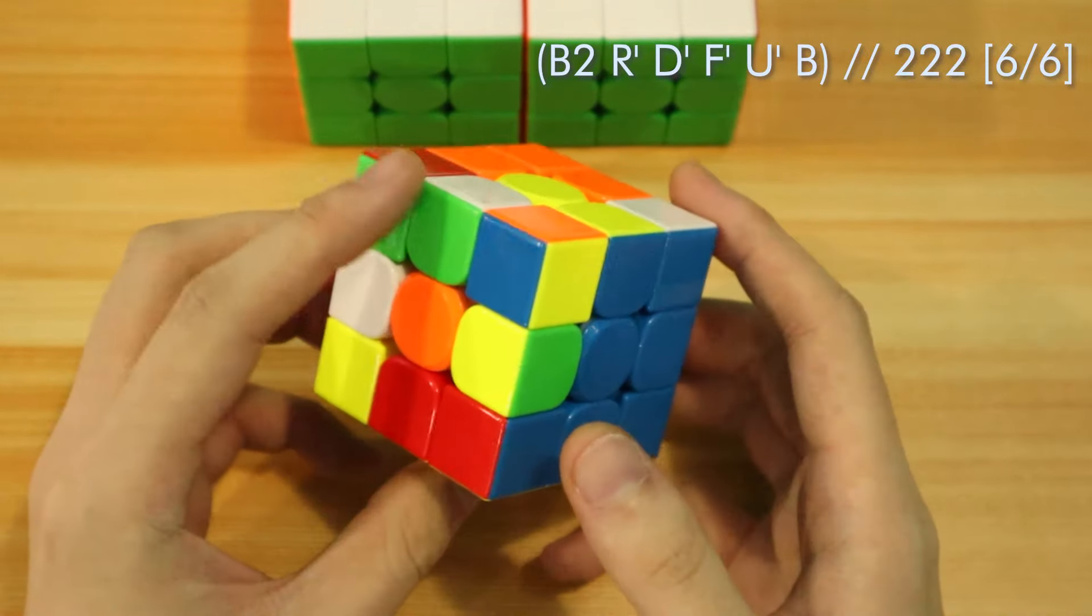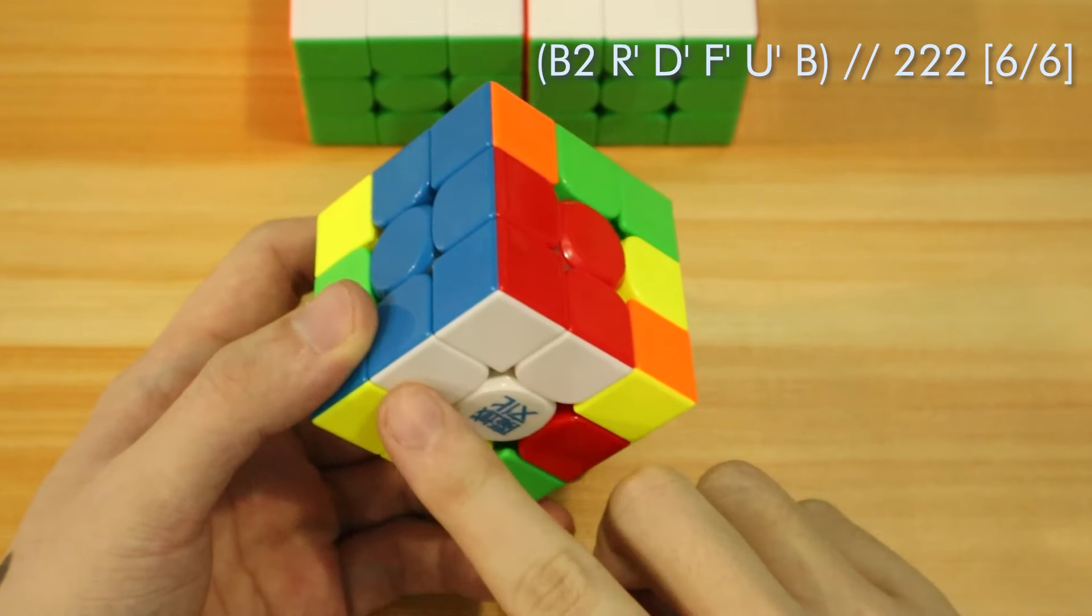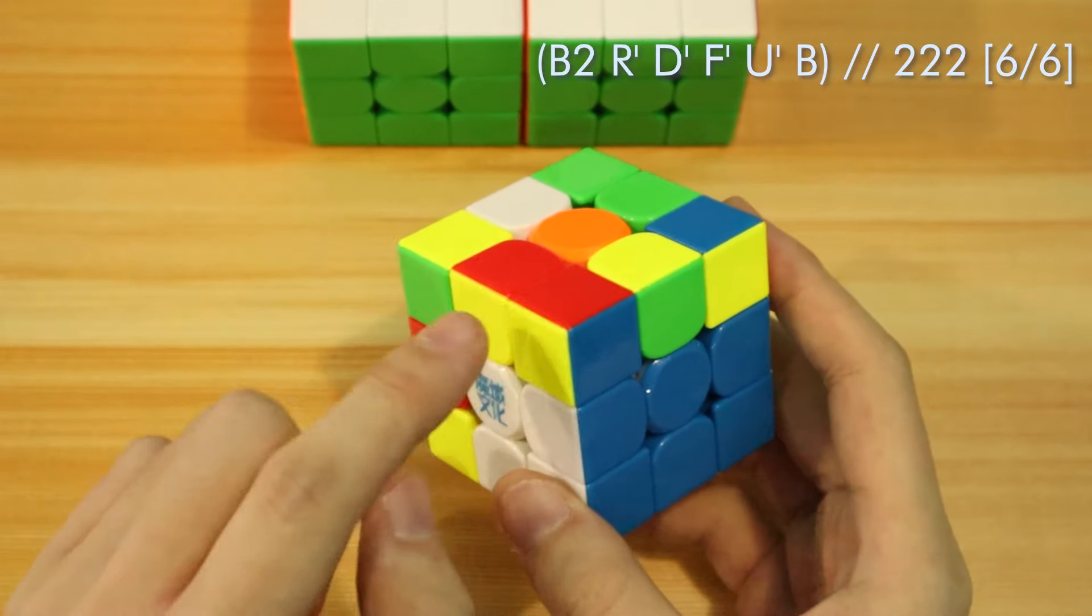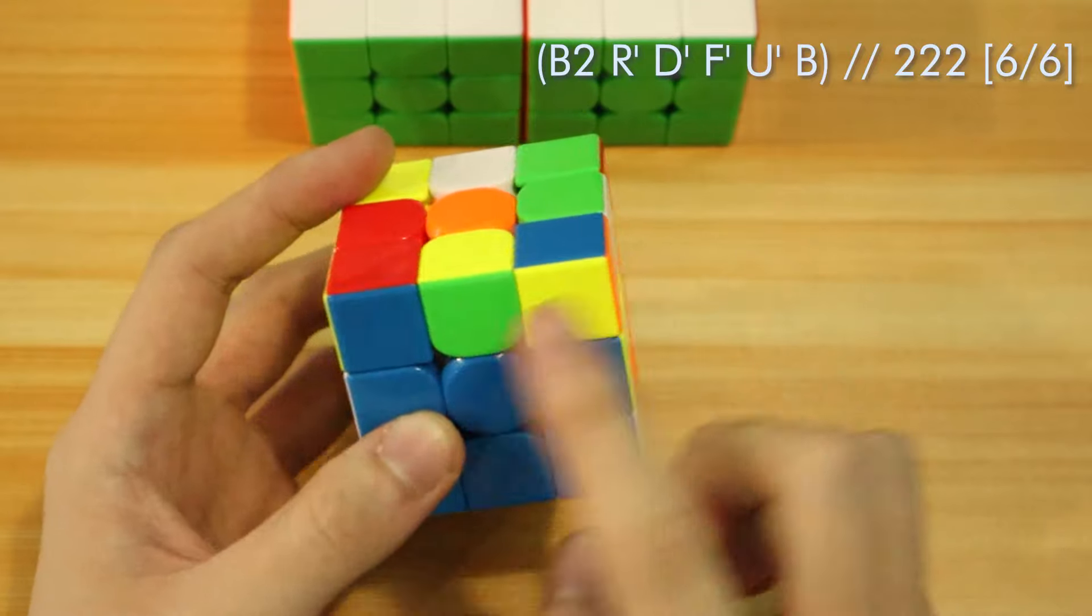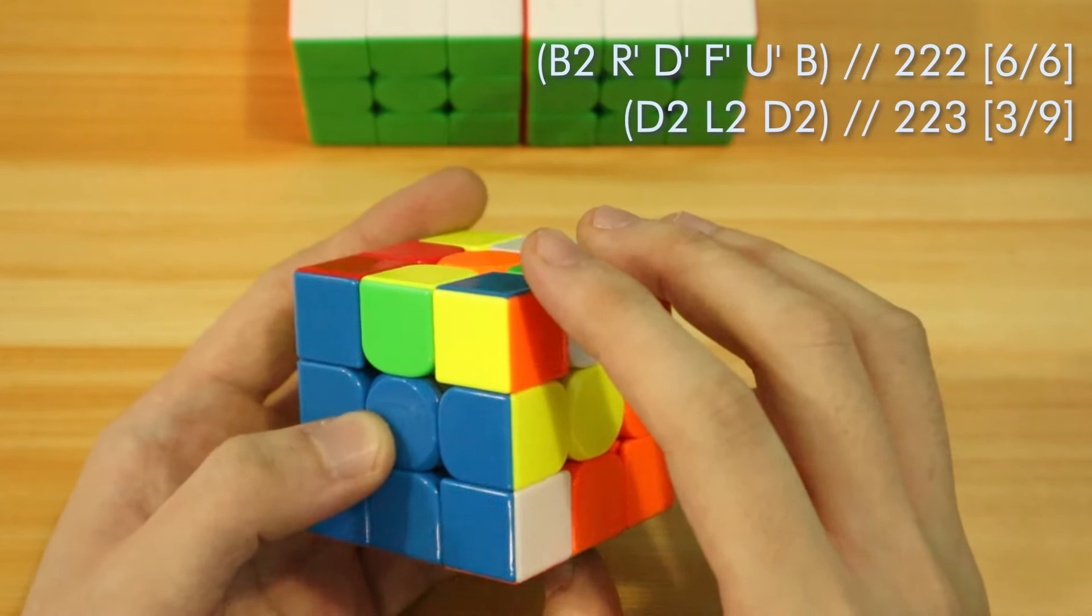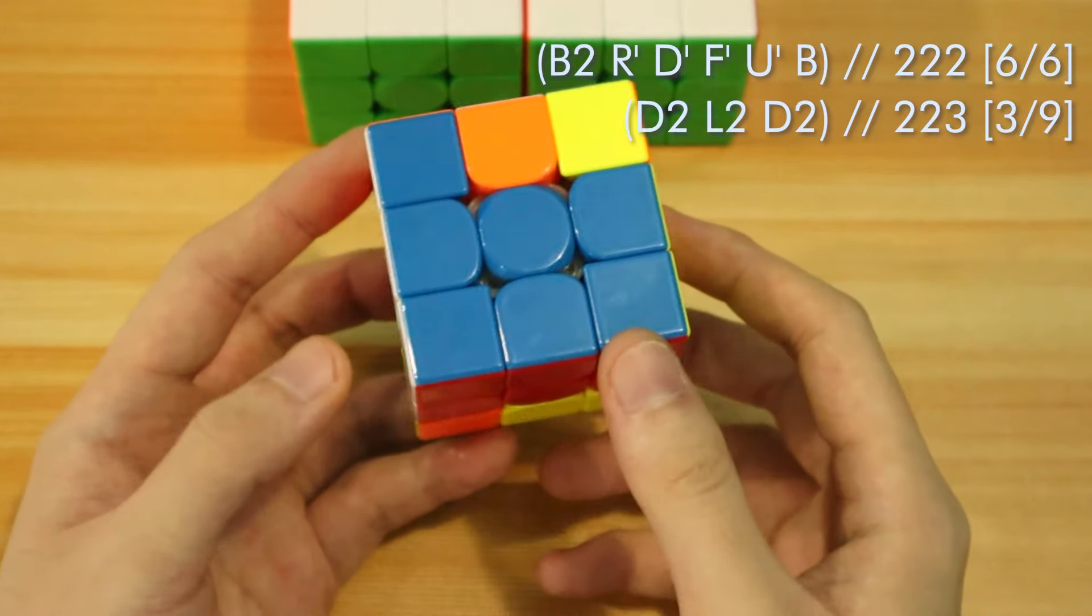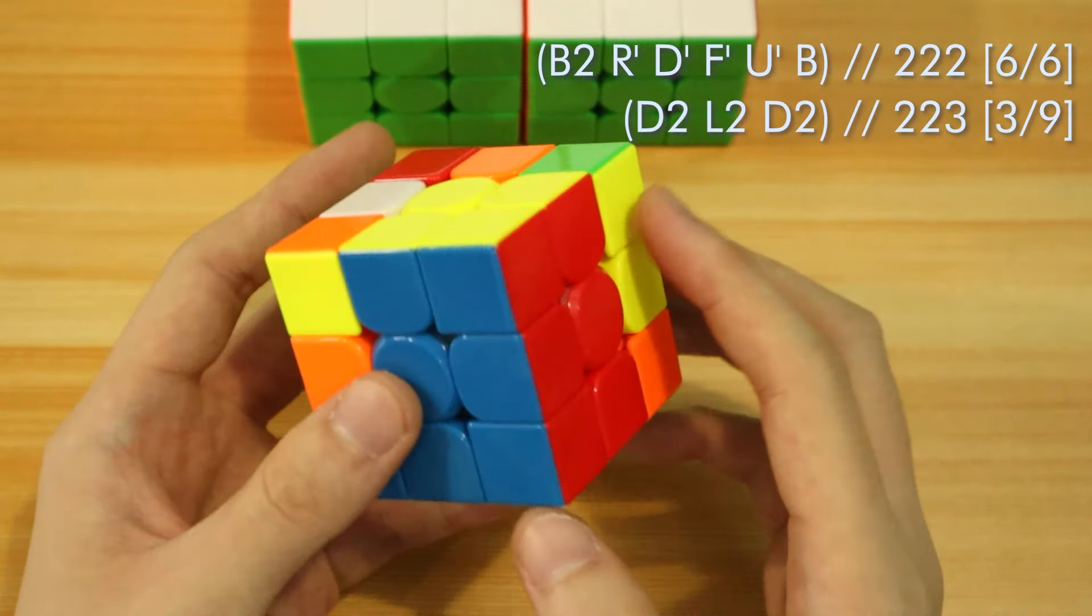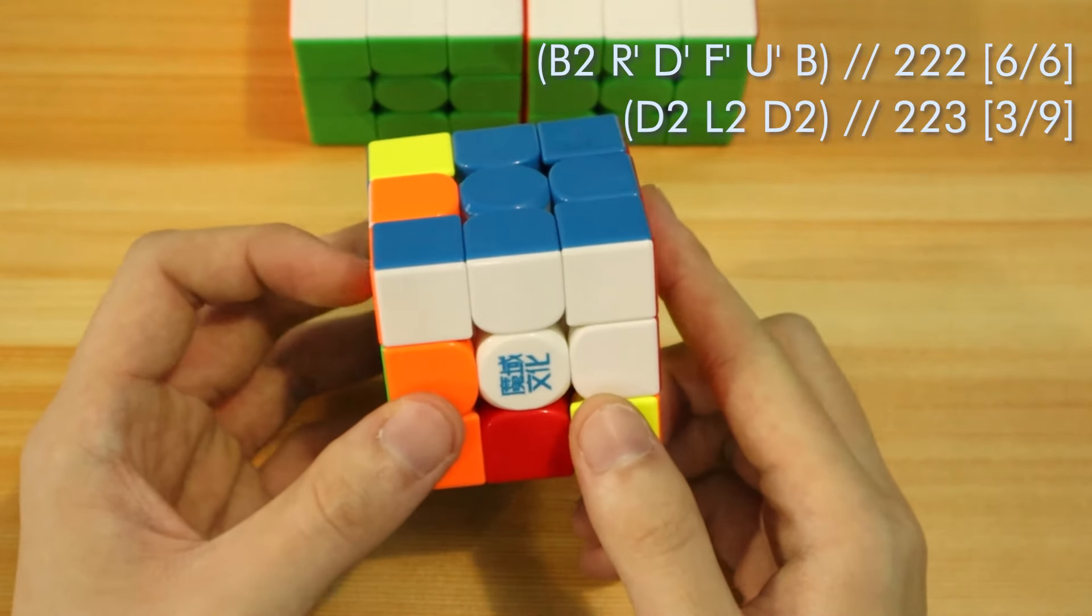Then immediately from here, I noticed that the edge for the blue was placed because at first I was aiming for the block on white. But then I realized that since this was here, as well as this red and yellow pair with a blue cross and bottom, I noticed that I can actually just do a D2 setup, L2 and a D2 to restore that. So it looks like that from over there and completes a 2x2x3 with additional 3 moves. So that amounts to 9.